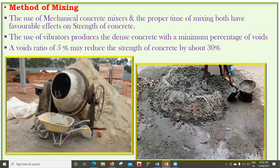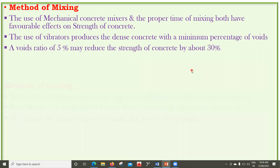A void ratio of just 5% may reduce concrete strength by about 30%. That is why we always use a needle vibrator and ensure proper compaction. Good compaction gives good density, and good density gives hardness and strength to the concrete.